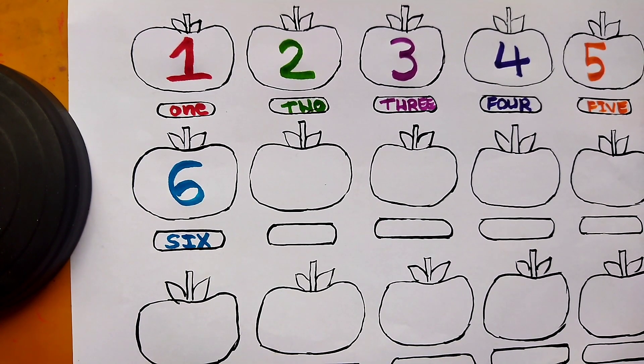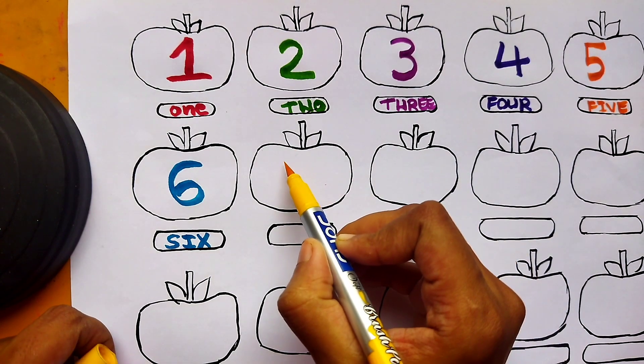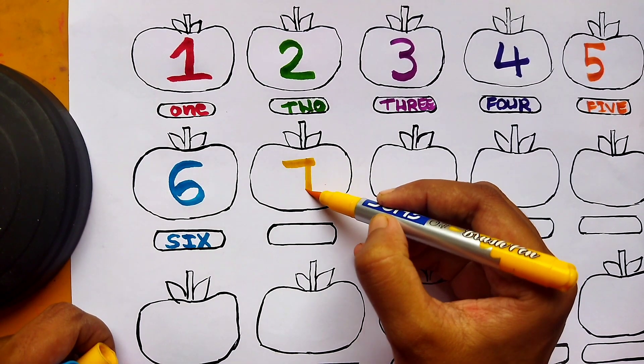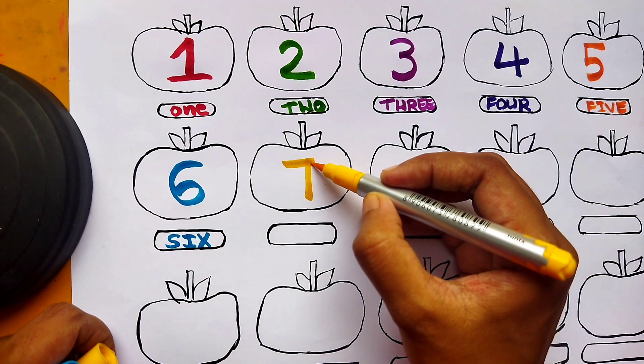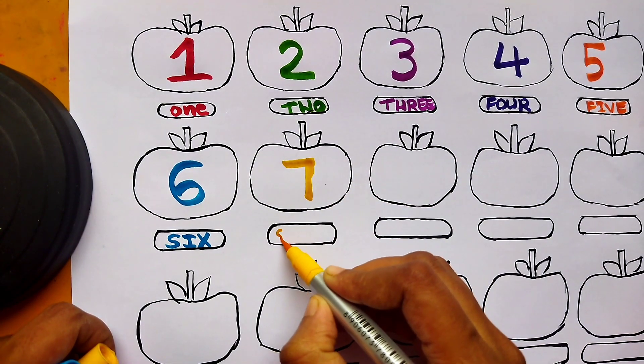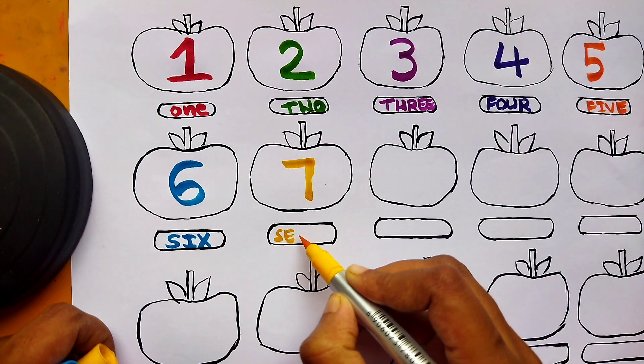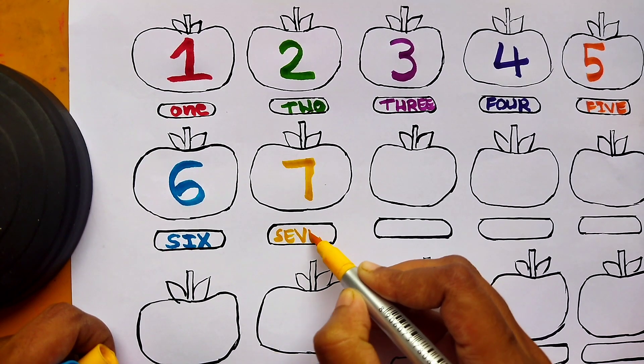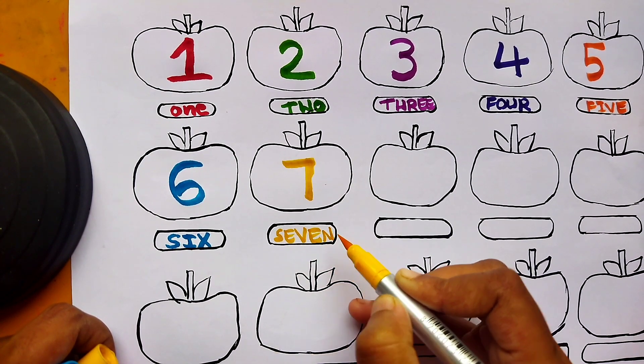Seven, yellow color. S, E, V, E, N, seven.